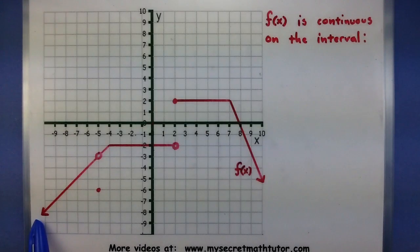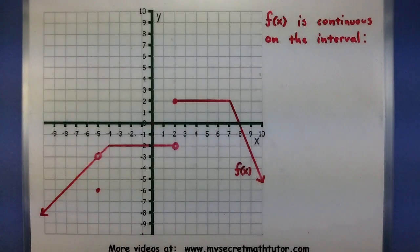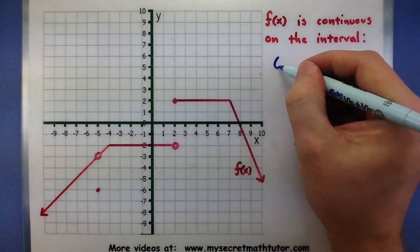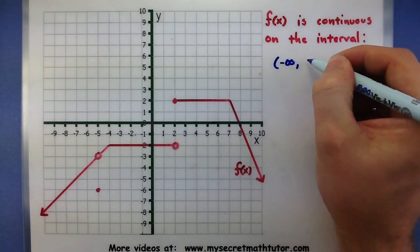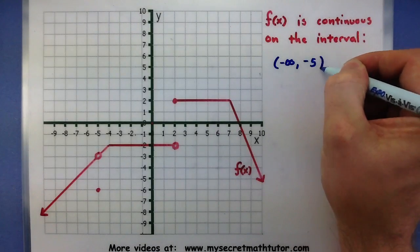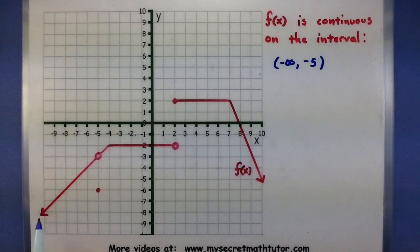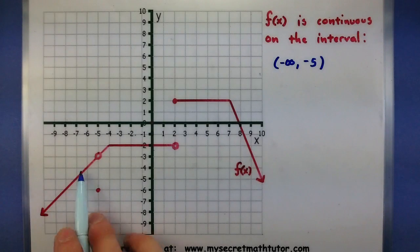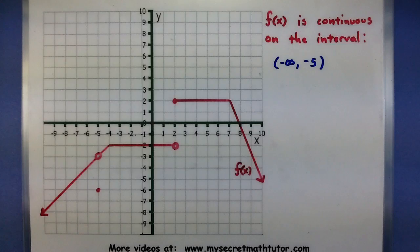Let's take the interval from negative infinity all the way up to negative 5. If I'm looking at just this interval right here, then it doesn't have any breaks or gaps in that particular section, so it is continuous on this interval.